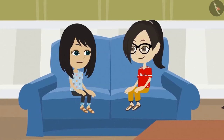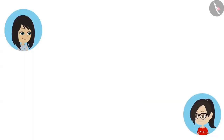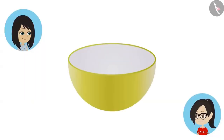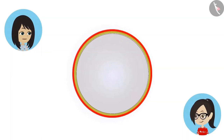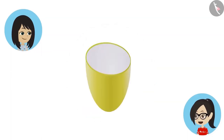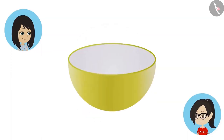Think if the wheels of the cycle are in the shape of a square — how will we ride it? Look at this bowl. Looking at it from the top, it is circular. But even from the front, it looks like it is made in the shape of a circle.